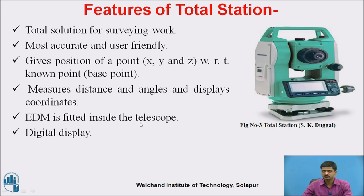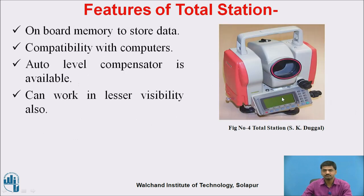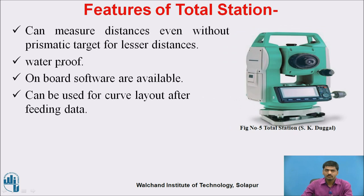EDM is fitted inside the telescope, so the telescope and digital display are both present. There is onboard memory to store data — each and all data is stored inside this particular instrument. Memory card or other modems are present inside it. It has compatibility with computers — easily you can retrieve this data using computers. An all-level compensator is also available inside this instrument and it can work in lesser visibility. It can measure distances even without prismatic targets for shorter distances. It is a waterproof instrument and different onboard softwares are available inside the instrument.